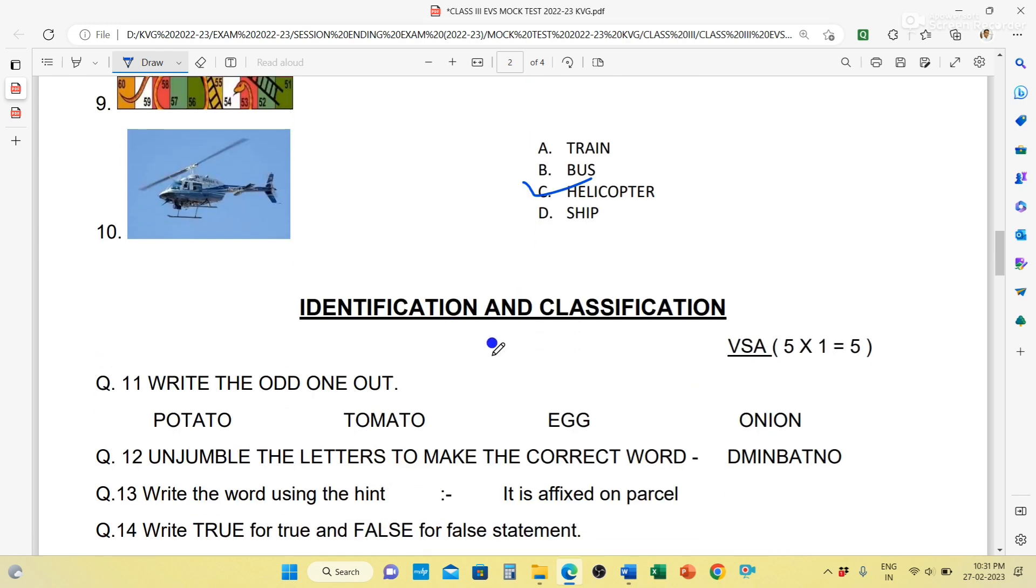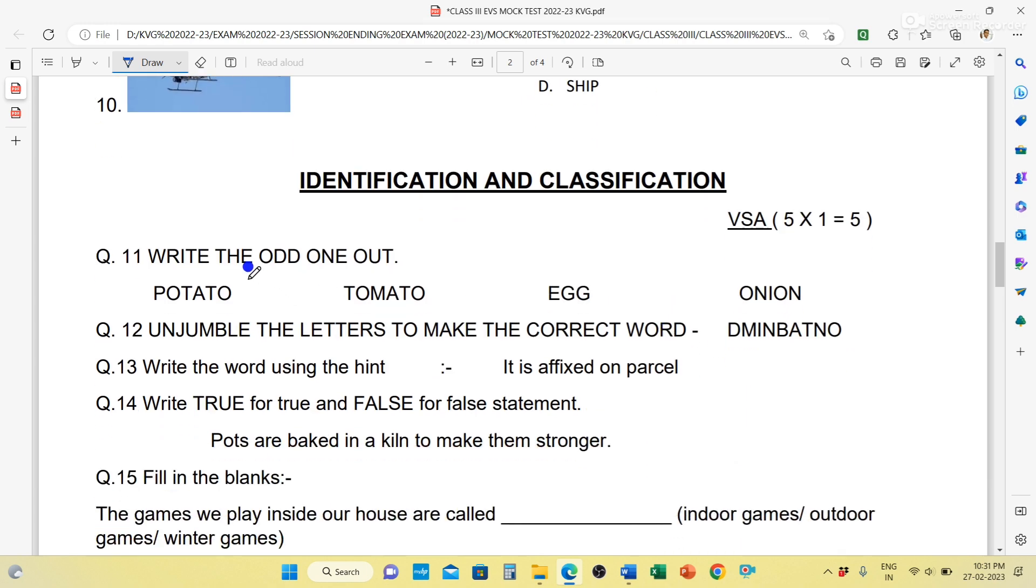Next is your identification and classification. First, objective questions, very short answers. Five questions, each carrying one mark. First one, write the odd one out: potato, tomato, egg, onion. You can see potato, tomato and onion are vegetables, but egg is not a vegetable. So egg is the different one.